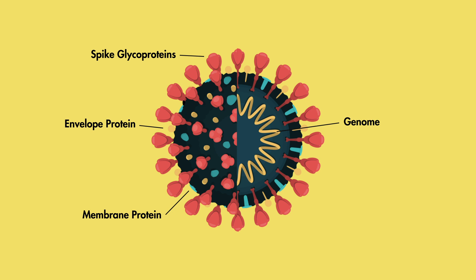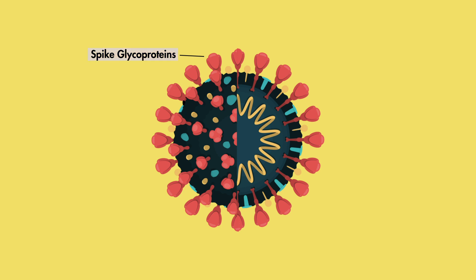Inside is a single-stranded RNA bound structurally by nucleocapsid proteins. But the virus's potential to infect humans starts with these spike glycoproteins, which give these viruses their name, allowing them to latch onto human cells and leading to infection.